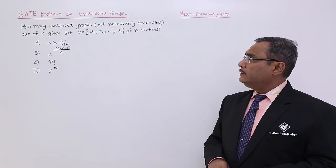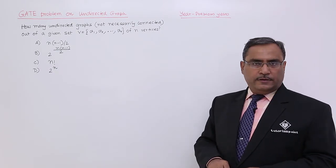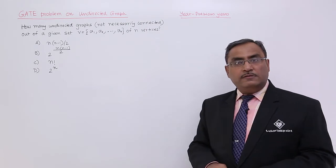How many undirected graphs, not necessarily connected, out of a given set V equals {v1, v2, ..., vn} of n number of vertices?